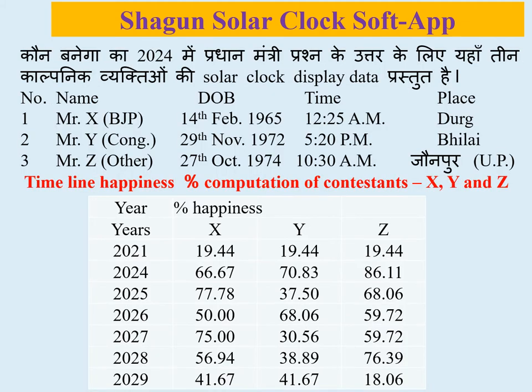Janta ki khushhali ka arth hai ki kisi pradhan mantri dvara apne karakal mein mehengai par ankhush lagana, petrol, diesel ki kimat niyantrit karna, food grains aadi daily needs ki vastuon ke dam na badane dena hai. Prashn ka uttar janta ki solar clock display ko pradhan mantri ki race mein shamil contestants ki solar clock display se compare karne mein mil sakta hai, aur janta ko tulnatmak adhar par sahi candidate ko chunav mein apne matadhikar ke prayog se sahi nirnay lene ka avsar mil sakta hai.